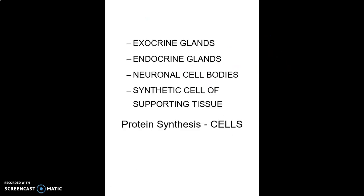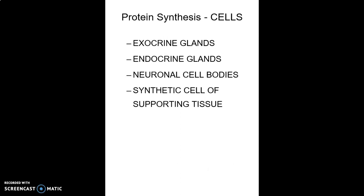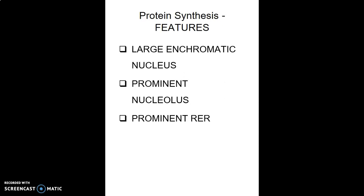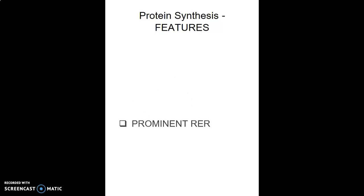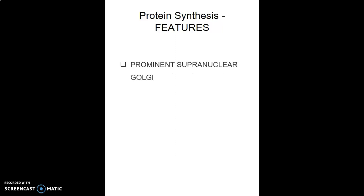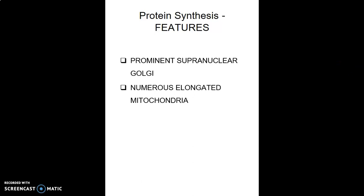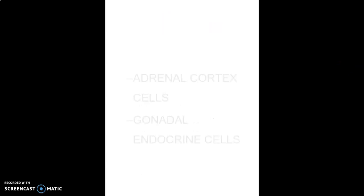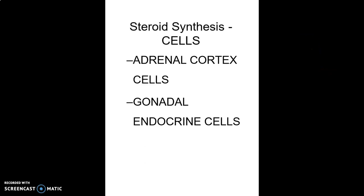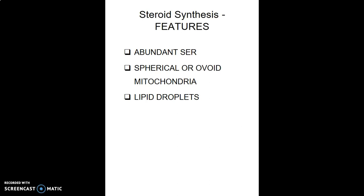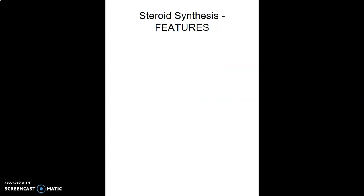Protein-synthesizing cells are found in exocrine and endocrine glands, neuronal cell bodies, and synthetic cells of supporting tissue. Their features include a large euchromatic nucleus, prominent nucleolus, prominent rough endoplasmic reticulum, prominent supranuclear Golgi, numerous elongated mitochondria, and abundant secretory vesicles. Steroid-synthesizing cells are found in the adrenal cortex and gonads. Their features include abundant smooth endoplasmic reticulum, spherical mitochondria, lipid droplets, prominent lysosomes, and a prominent nucleus.